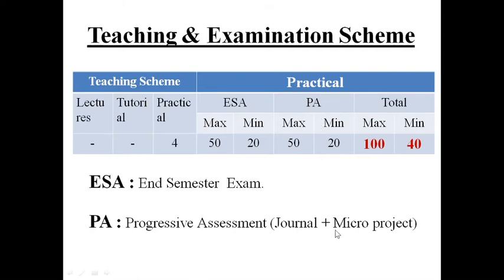The other 50 marks are reserved for the PA — progressive assessment — or we call it term work. Term work consists of journals and a micro project. Both together constitute the term work, and out of this 50 you must get at least 20 marks to pass. Your term work will consist of a journal with relevant write-up and output of experiments in the form of a printout and soft copy. You will also be allowed a micro project in a group, which you must complete in the stipulated period.